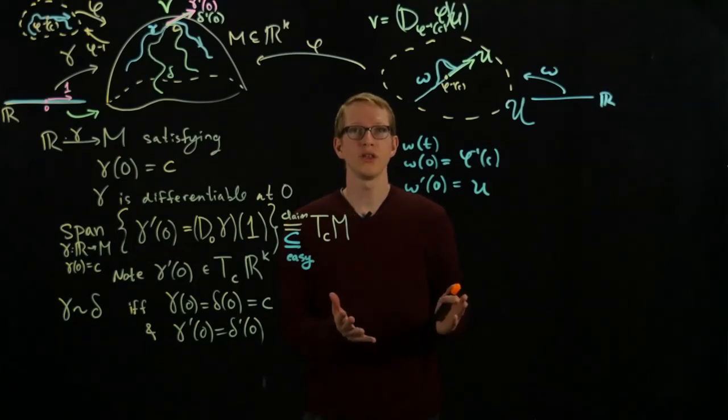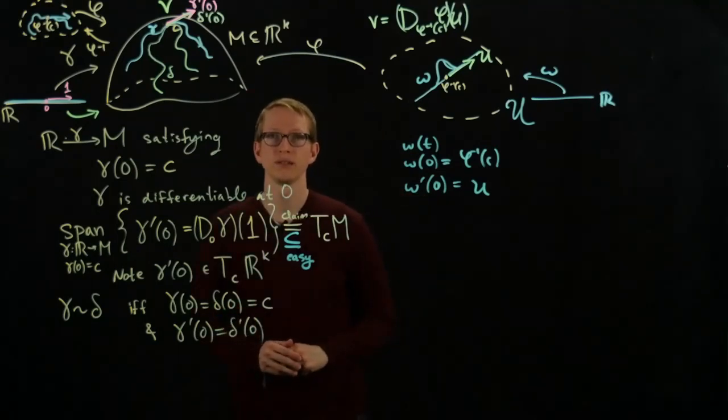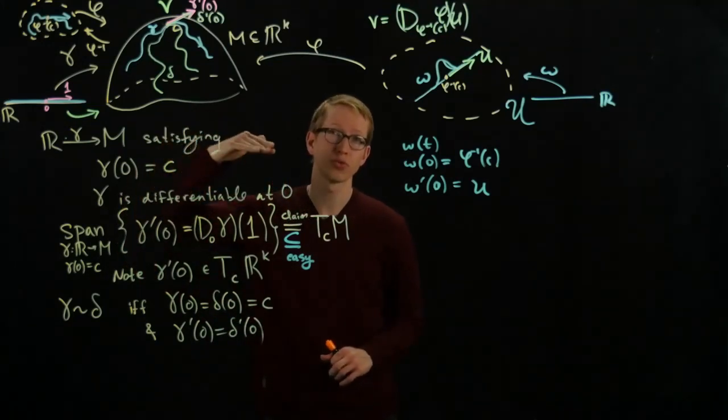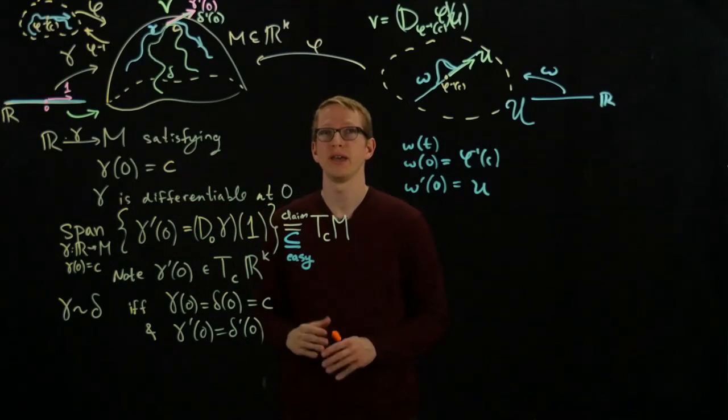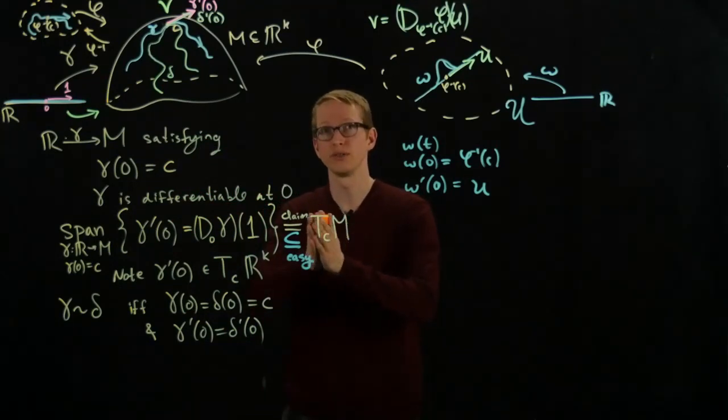So this is just another way of visualizing what the tangent space of a manifold is, this time in terms of differentiable curves that pass through C in M, and then you take their derivatives exactly when that path reaches the point C.